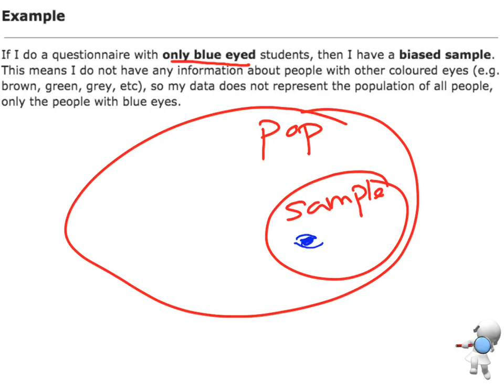I've only got blue eye colors, so it means I don't have any information about any other eye color at all. That's not going to give me representative data.